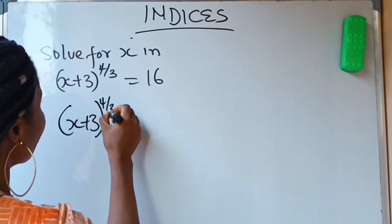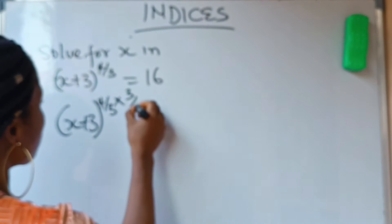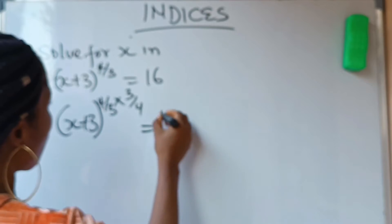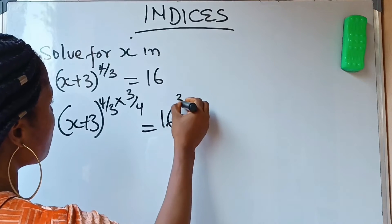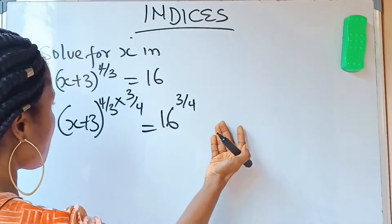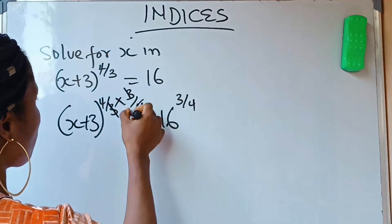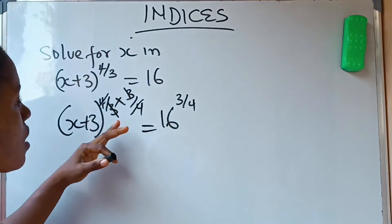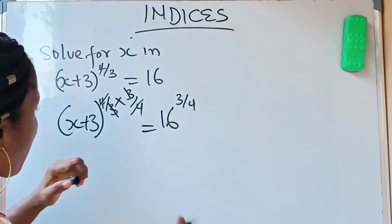I'm going to write (x+3) raised to the power 4/3 times 3/4 equals 16 times 3/4. Whatever I do to this side, I also do it to this side. You notice that 3 cancels 3, 4 cancels 4, we have nothing left on this one.